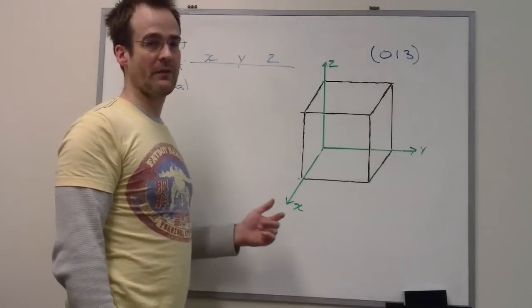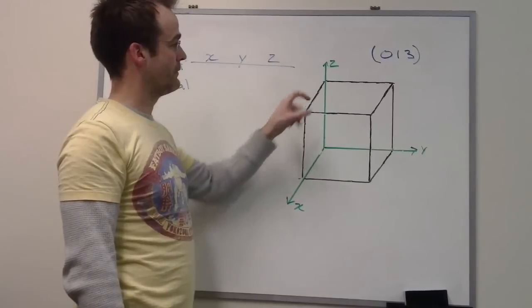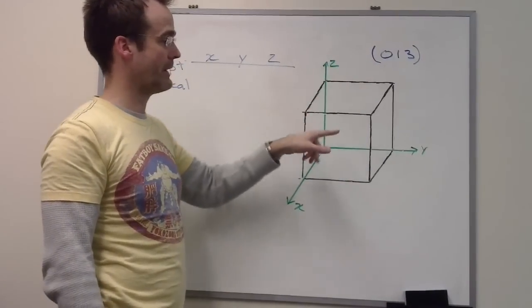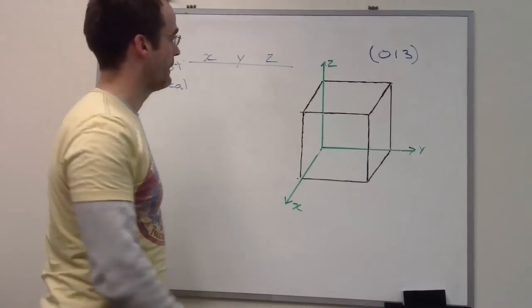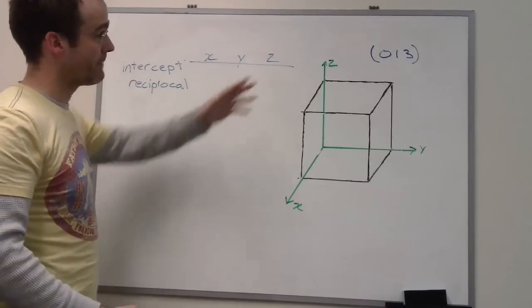Question 6. So this is question 6 from the December 2010 exam. And it just asks us to draw the 013 plane within the unit cell. So we have to work backwards from the Miller Indices.